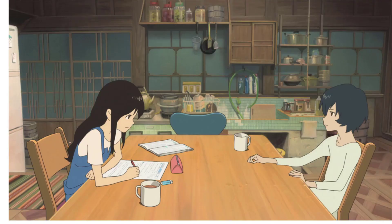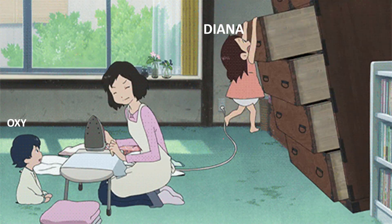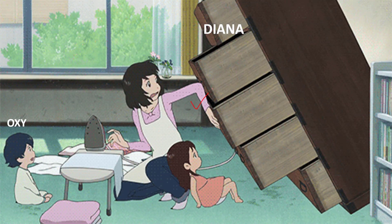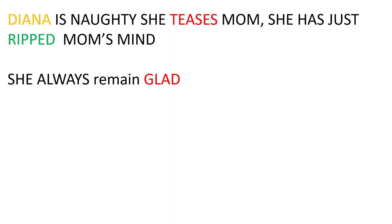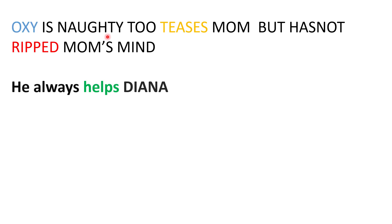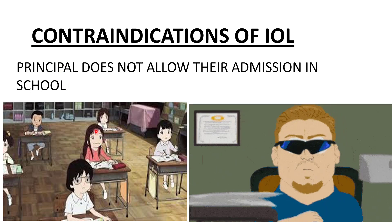Here is the couple worried due to their children, because their children tease them a lot. They want their admission in school. They have two children: the name of the girl is Diana, while the name of the boy is Oxy. Diana is naughty — she teases mom and has deprived mom's mind, but she always remains glad. Oxy is naughty too — he teases mom but has not deprived mom's mind. He always helps Diana, his sister.